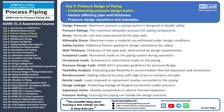Nozzle loads refer to the loads imposed on equipment nozzles connected to the piping. Proper analysis and consideration of these loads are essential to prevent damage to equipment and piping. Flange leakage prevention is crucial to avoid leaks at flanged connections when the system is under pressure — proper gasket selection, bolt tightening, and installation are key factors. Expansion joints are flexible components that absorb thermal expansion and contraction, allowing the piping system to accommodate temperature changes without excessive stress.